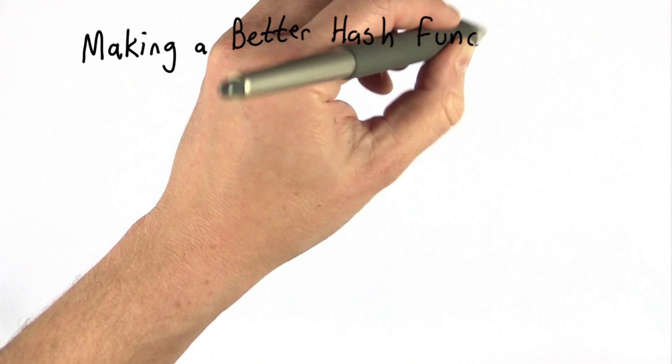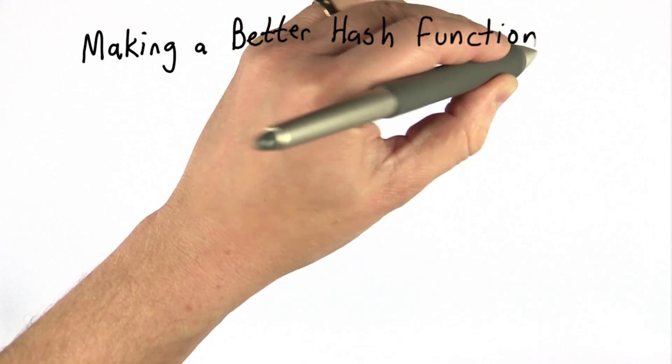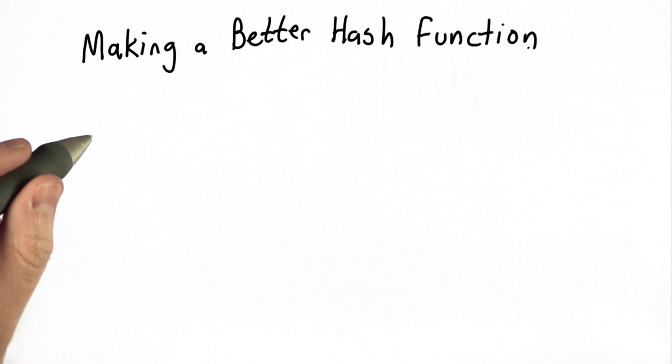We've seen the basic approach of looking at just the first letter does not work very well. It doesn't use enough buckets and it doesn't distribute the keys well.